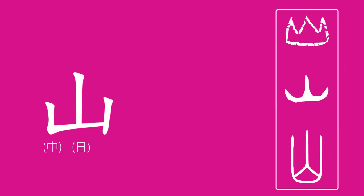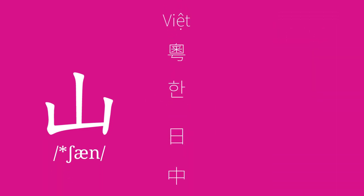In modern Chinese, Japanese, and Korean, the character can mean mountain, hill, or peak. The middle Chinese pronunciation was shan. This becomes shan in Chinese, san in Japanese, san in Korean, san in Cantonese, and sun in Vietnamese.